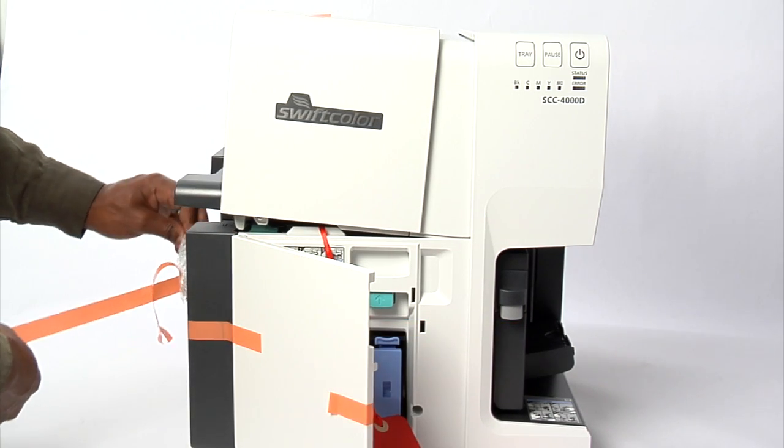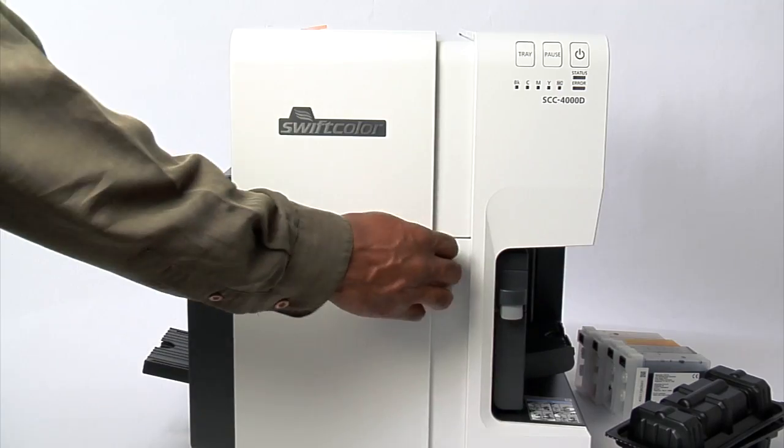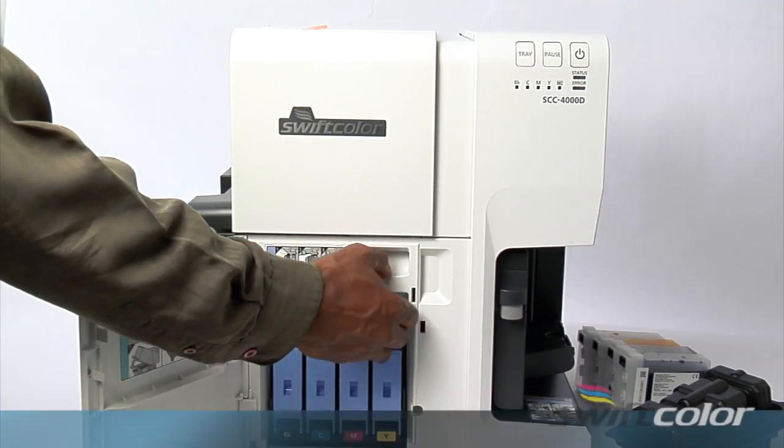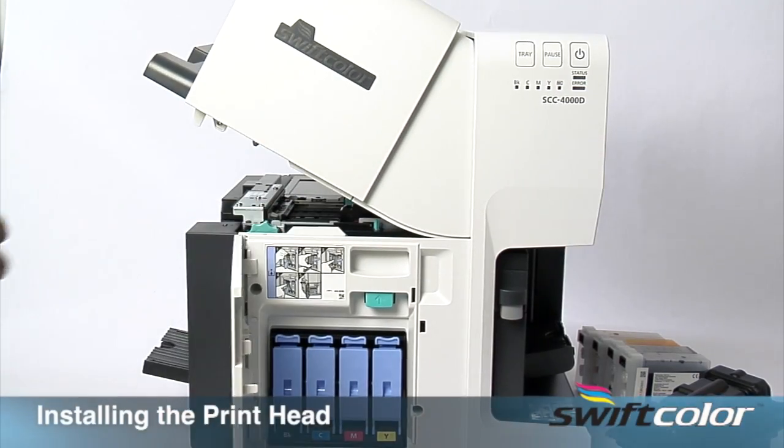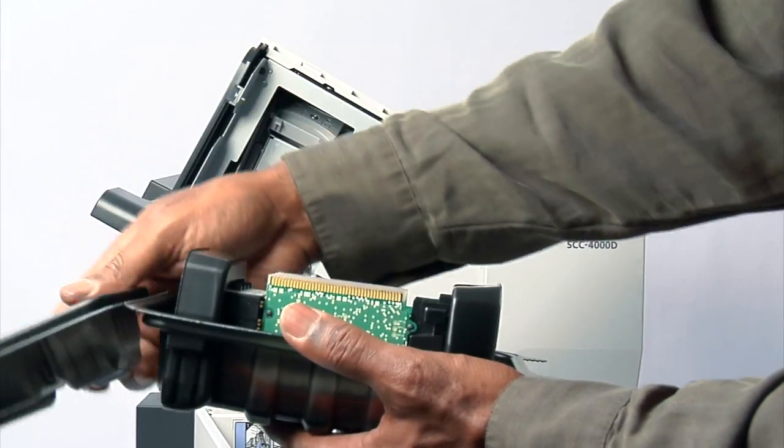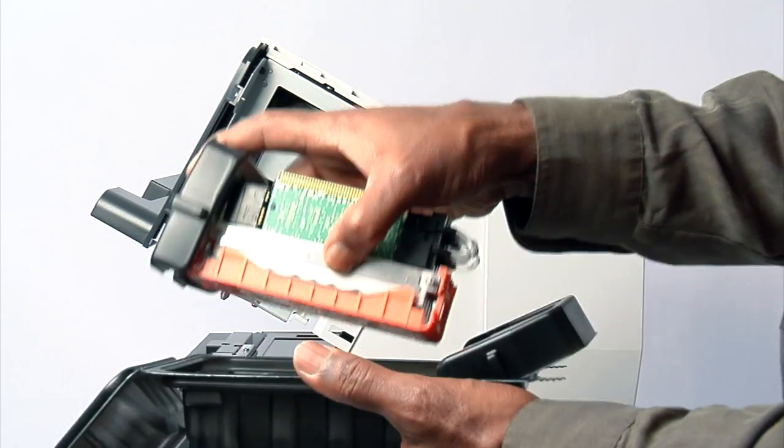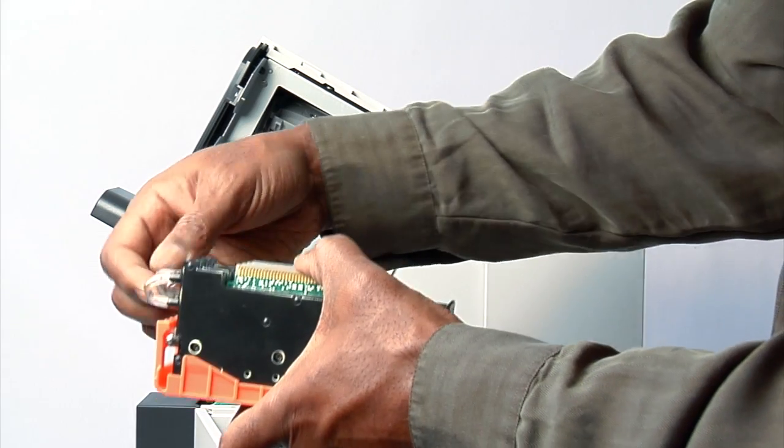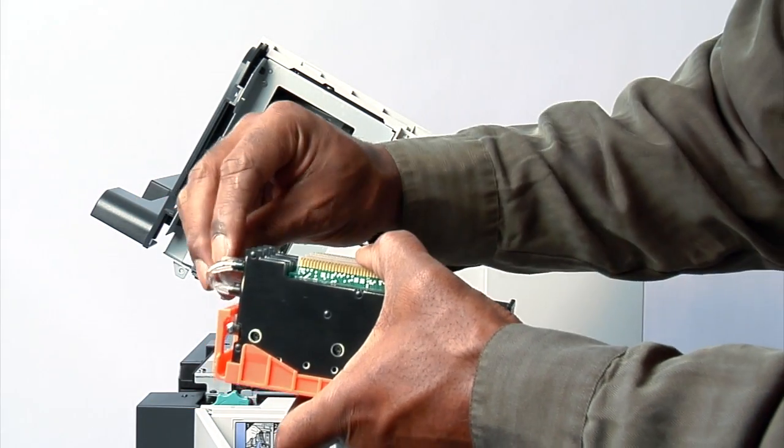Once the packing tape and tags are removed, you can install the printhead. Installing the printhead. First, open the sealed package that contains the printhead. Next, remove the shipping tubes from the printhead unit. The printhead is ready to be installed.